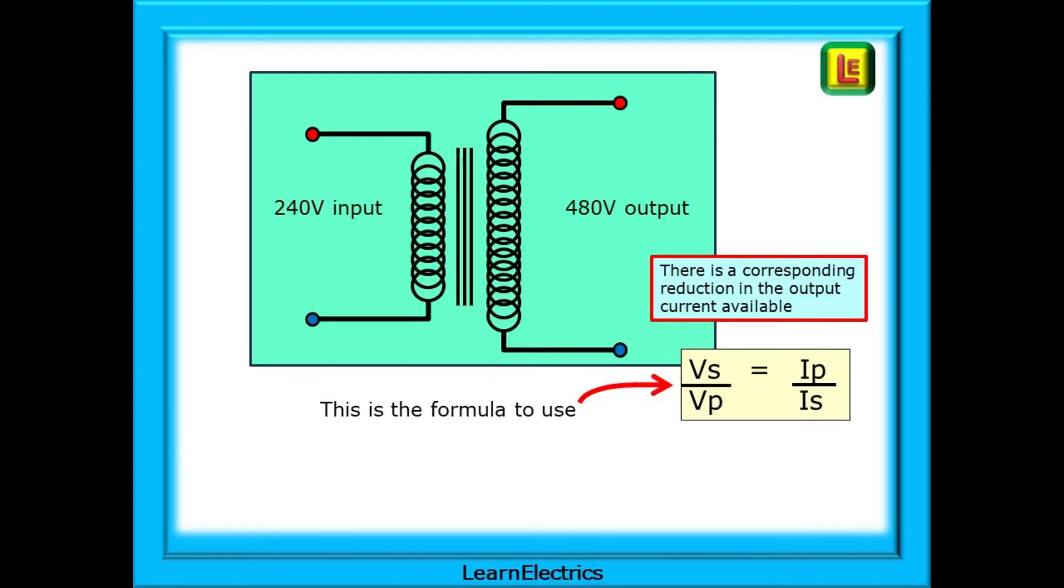In this case there will be a corresponding reduction in the available output current. We say that VS over VP is equal to IP over IS. Notice that with the voltage the S is on the top and the P on the bottom, but for the current I we have P on the top and S on the bottom. Remember this, don't get it mixed up.